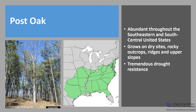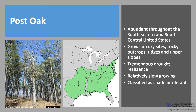It typically grows on dry rocky outcrops, ridges, and upper slopes — pretty poor sites. Post oak exhibits tremendous drought resistance. It's relatively slow growing and commonly overtopped by other trees, including other oaks, on better sites. However, on those poor sites, post oak tends to persist and can become dominant because it's more drought resistant than the other species it's growing with. It's classified as shade intolerant.